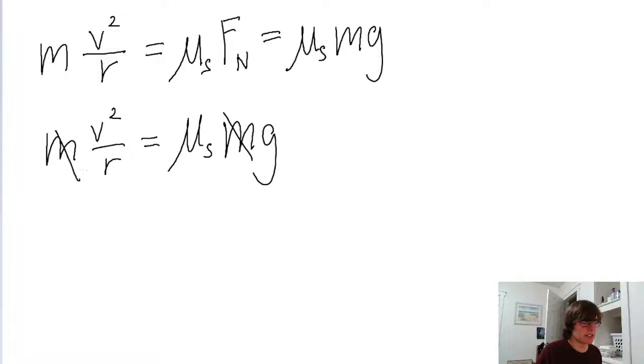We can cancel out the m's because that's on both sides of the equation. So we have v squared divided by r equals mu sub s g.